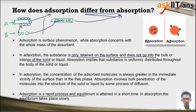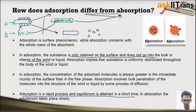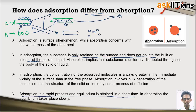Finally, adsorption is a rapid process — equilibrium is attained in a short time. There is also a reverse process called desorption, in which molecules detach from the surface to regenerate free substances. Desorption is the inverse of adsorption. The equilibrium between adsorption and desorption is attained quickly. In absorption, the rate is slow and equilibrium is attained slowly.